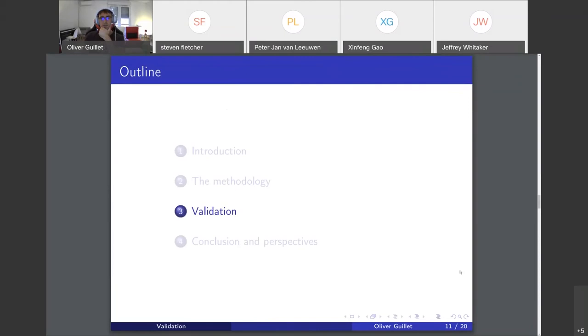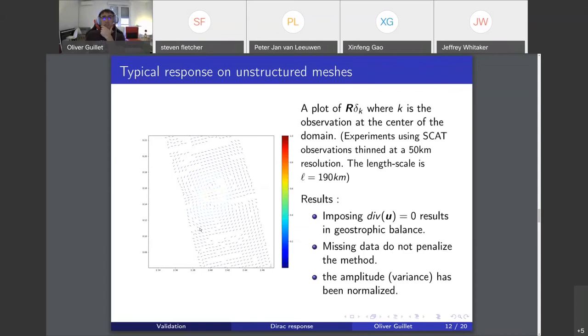This is the methodology. Let's talk about validation. This is the same data I used before but on a different domain. This is a typical response to a direct impulse, so basically you put zeros everywhere but a one somewhere and you apply R. This is what you get, you see you get this non-divergent wind.